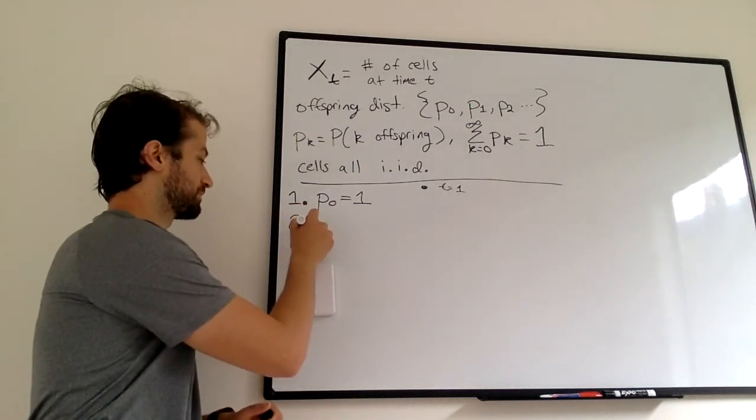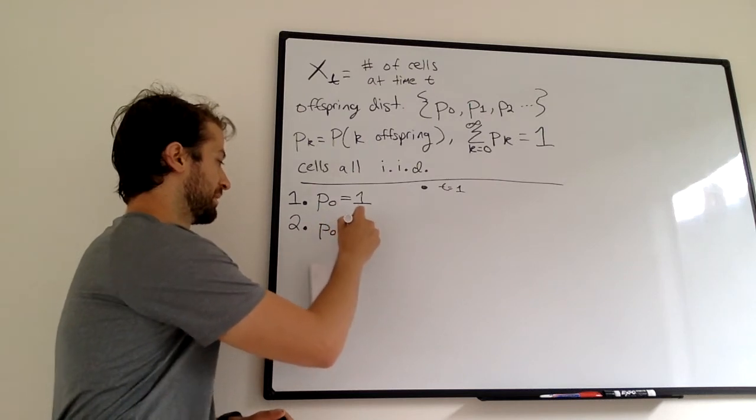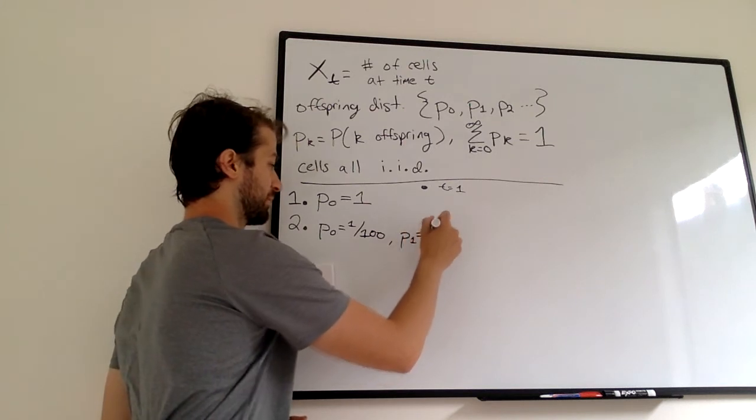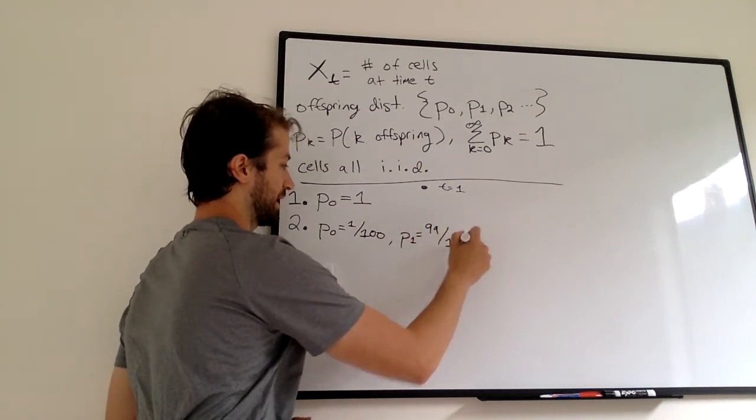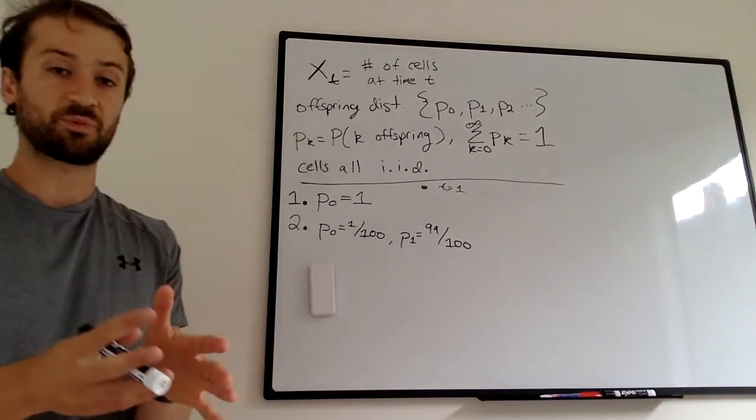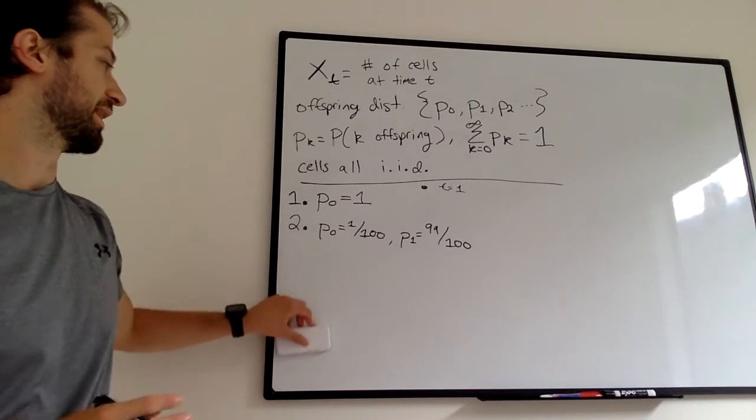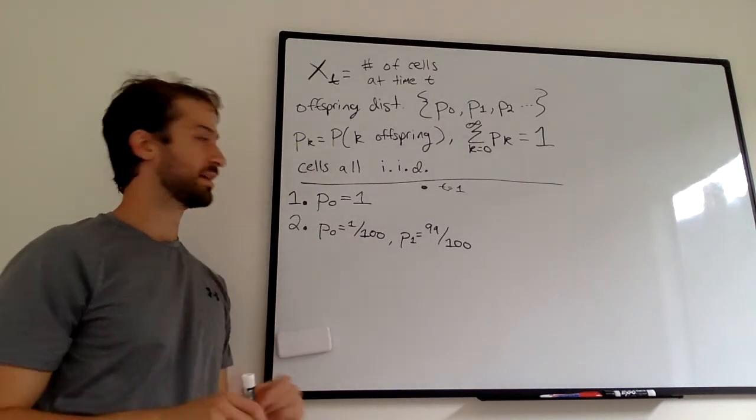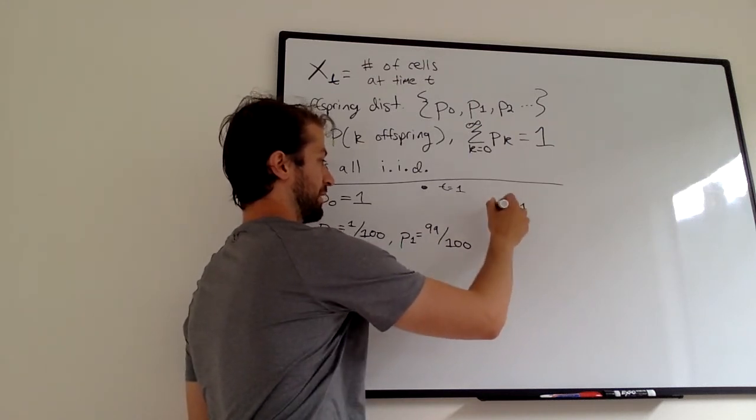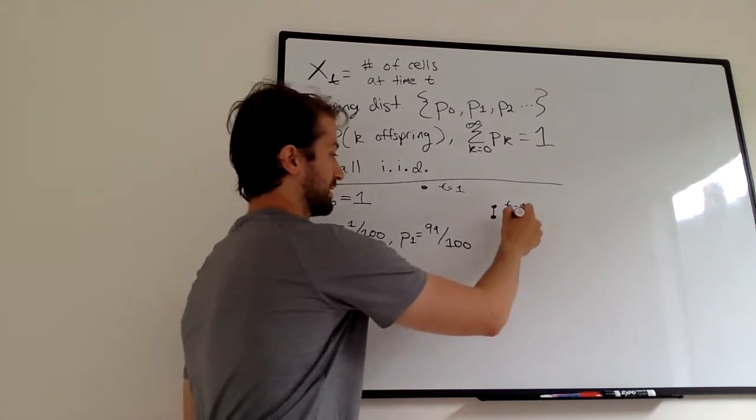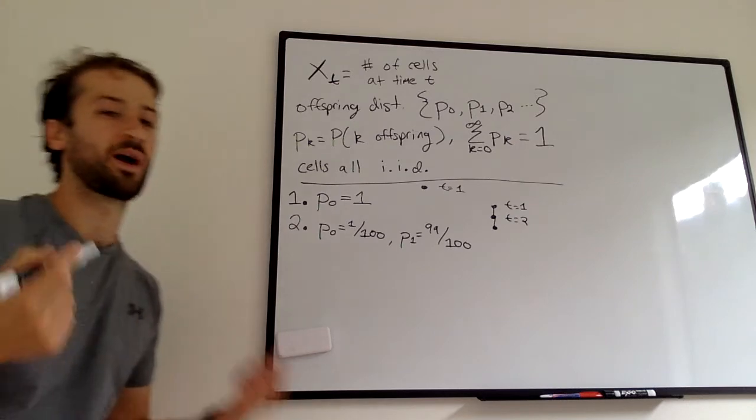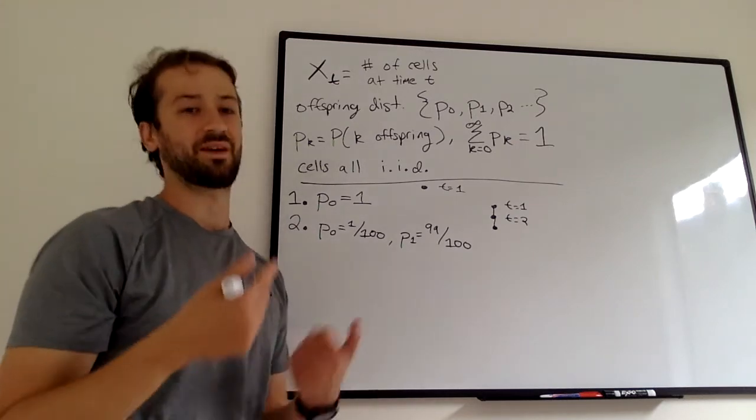A bit more exciting is P sub 0 equals 1/100 and P sub 1 equals 99/100. These sum to 1 - either we have no offspring or we have one offspring. And the way this works, there's a pretty high probability of having one offspring. So let's say we start at T equals 1. We have one offspring. Say at T equals 2, another offspring. And we're going to keep going like that for a while, because we have a pretty high probability of having at least one offspring.